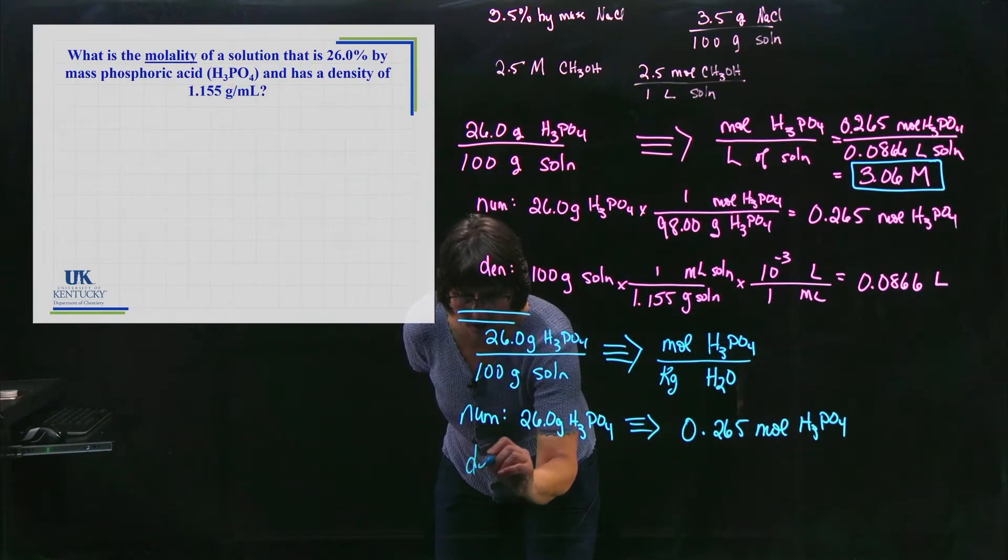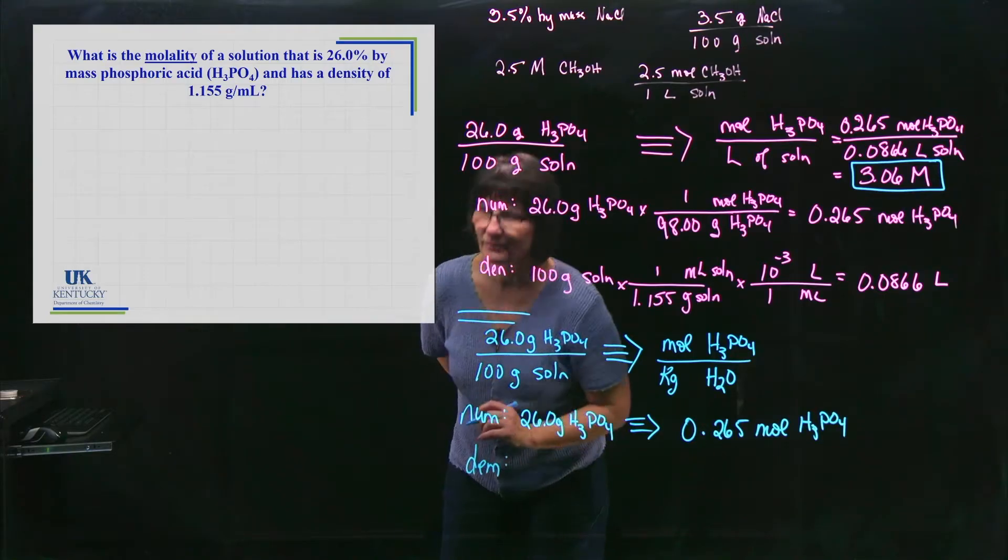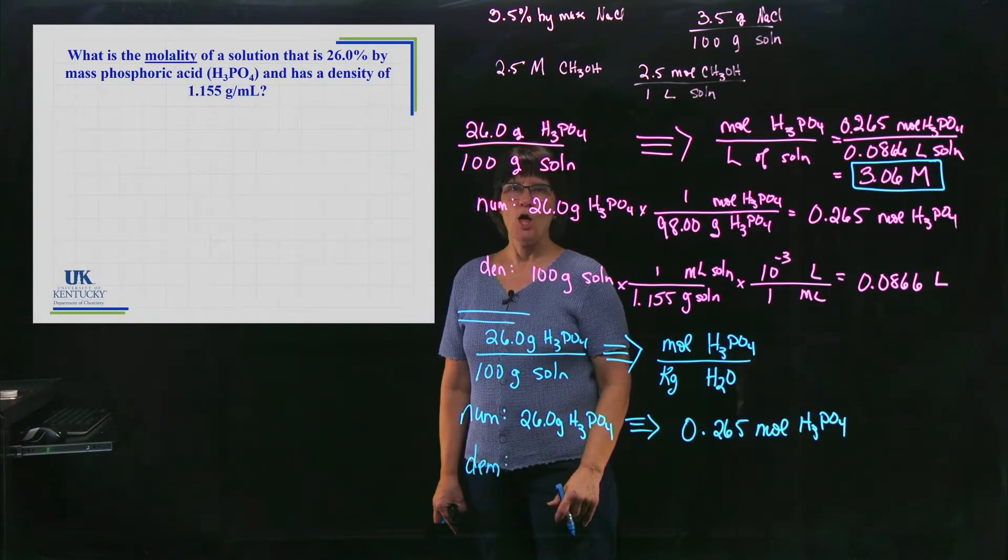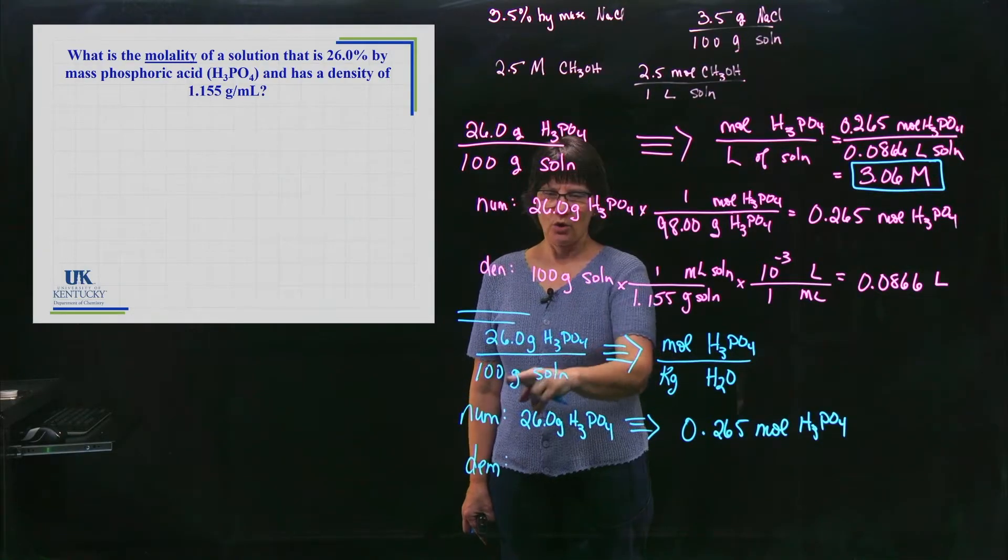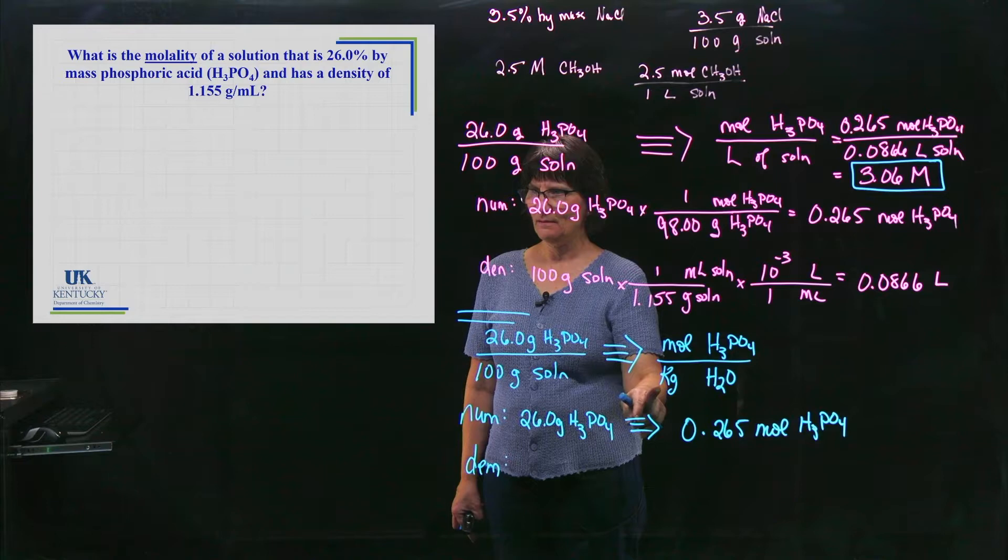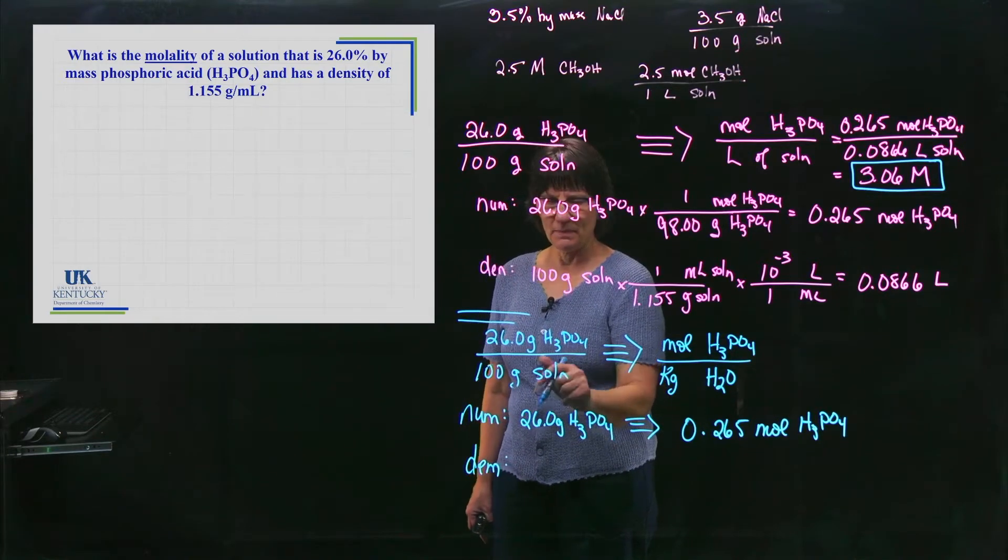All right, denominator. This is where students don't complete the process sometimes. We are doing two different conversions. Actually, here, what are we doing? We're going from mass. It's still mass, but it's grams and kilograms. But here's the biggie: solution is everything. Water is just the solvent.